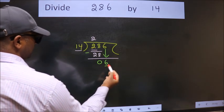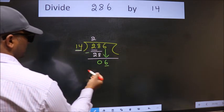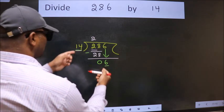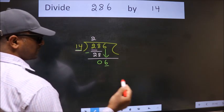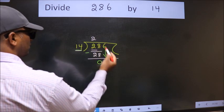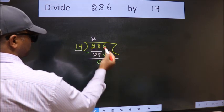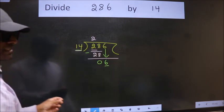Here we have 6, here 14. 6 is smaller than 14. So what many do is they directly put dot, take 0, which is wrong.